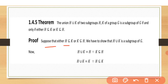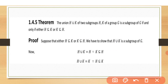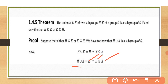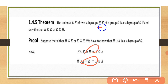Suppose either H is contained in K or K is contained in H — meaning all elements of H are present in K, or all elements of K are present in H. We have to show that H∪K is a subgroup of G. By the given condition, if K is contained in H, then H∪K equals H. And if H is contained in K, then H∪K equals K. Since H and K are defined as subgroups, H∪K is also a subgroup.